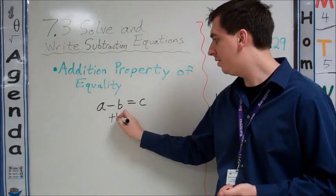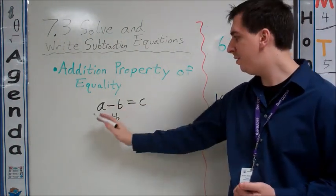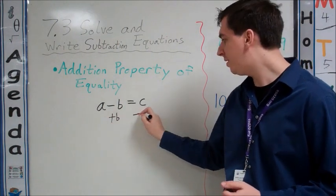What's the opposite of minus or subtracting B? That would be adding B. If I add B to the left side of the equation, I also have to add B to the right side of the equation.